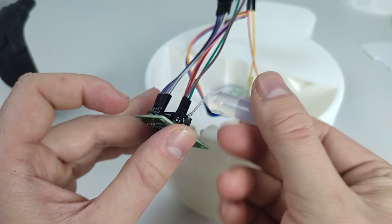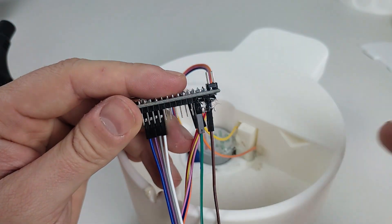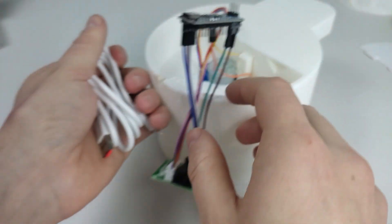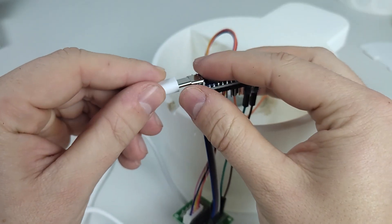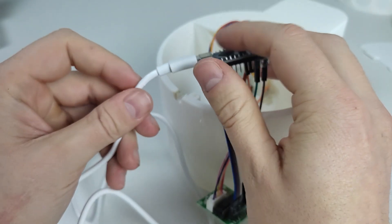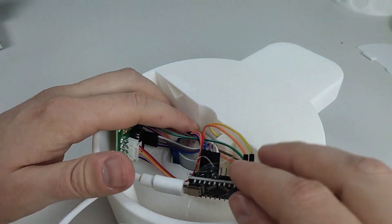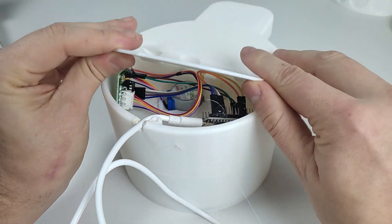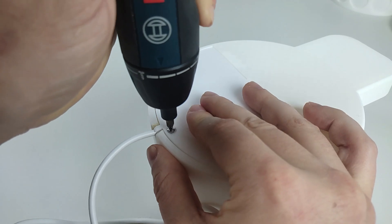Secure all connections with a bit of hot glue. If you are unsure whether you wired it correctly, test the Arduino first before gluing everything. Finally, connect the USB-C cable to your Arduino and close the technical compartment with the lid and a small M3 screw.